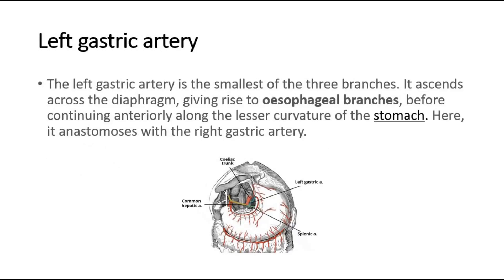First, the left gastric artery is the smallest of the three branches. It ascends across the diaphragm, giving rise to esophageal branches, before continuing anteriorly along the lesser curvature of the stomach, where it anastomoses with the right gastric artery.